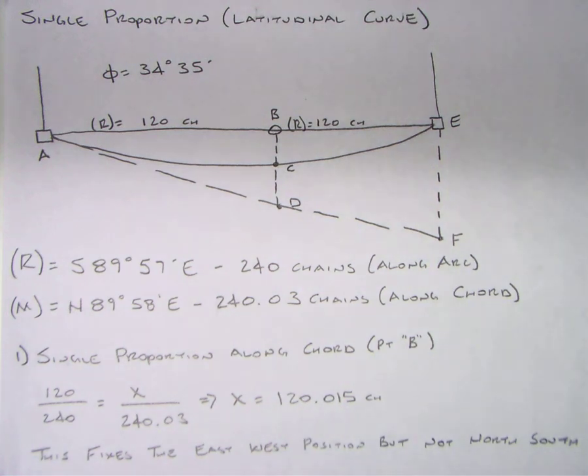We've taken a look at a basic single proportion and proportion in a lost closing corner using single proportioning. Now let's take a look at doing a single proportion where we have to take the latitudinal curve into consideration.